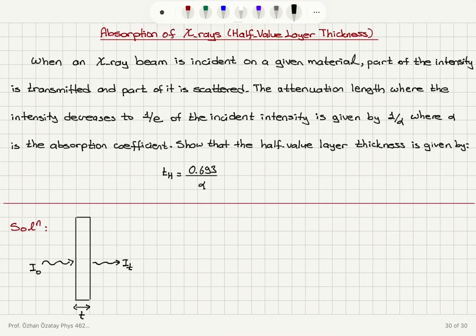Absorption of X-rays, half-value layer thickness. When an X-ray beam is incident on a given material, part of the intensity is transmitted and part of it is scattered. The attenuation length, where the intensity decreases to 1/e of the incident intensity, is given by 1 over alpha, where alpha is the absorption coefficient. Show that the half-value layer thickness is given by 0.693 divided by alpha.